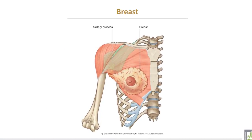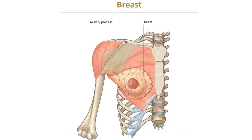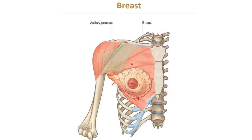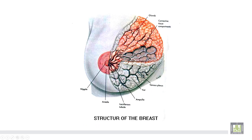This is the breast here. This is the mammary gland, this is the areola, and this is the nipple. It reaches up to the second rib upward, sixth rib downwards, margin of the sternum medially, mid-axillary line laterally, and this is the axillary tail.